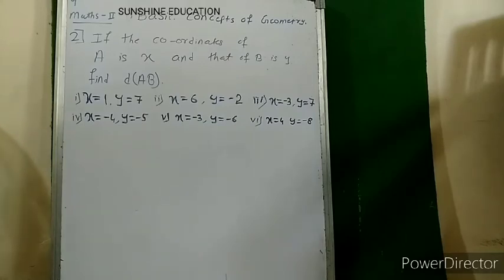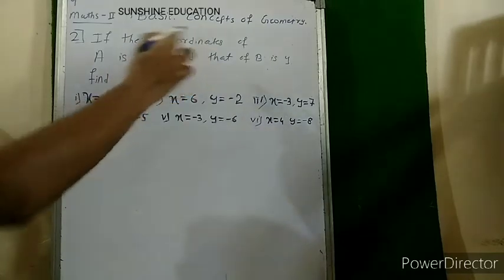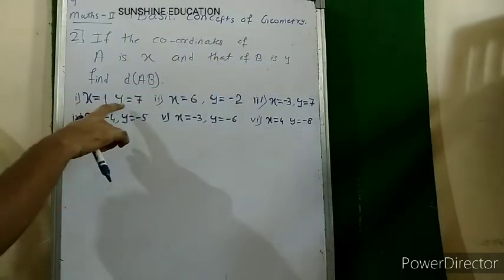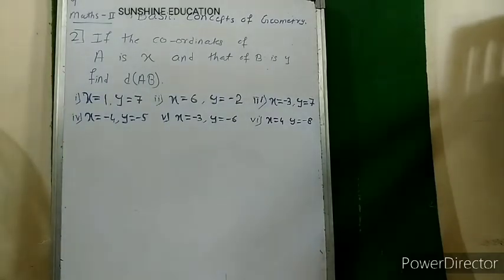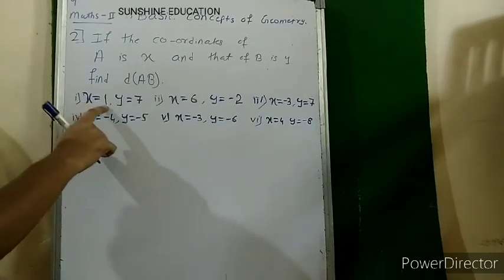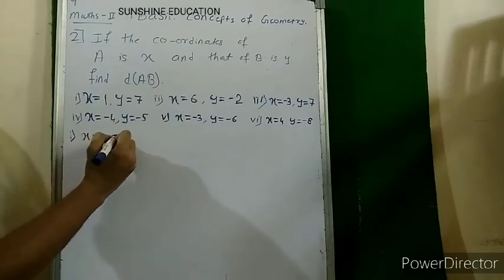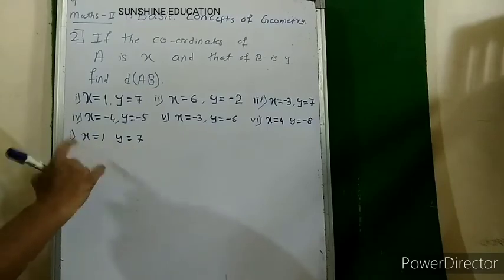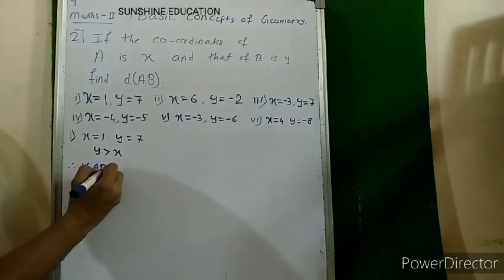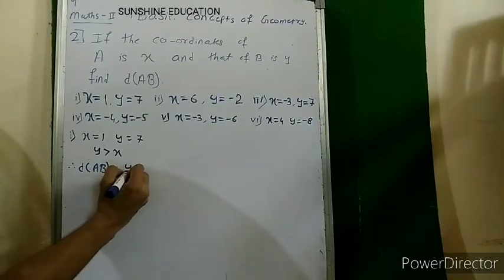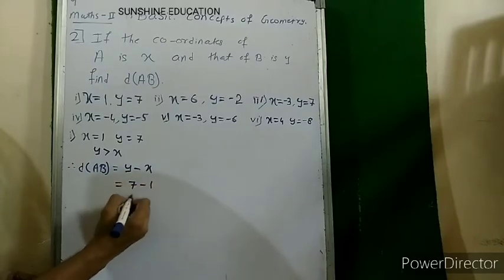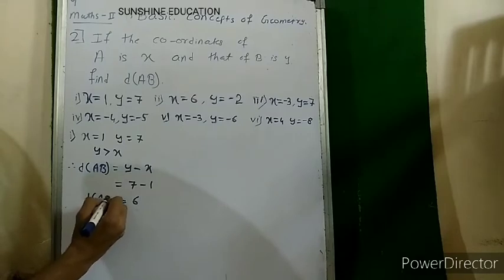Now the second part of the exercise: if the coordinate of A is x and that of B is y, find distance AB. First sub-question: x = 1 and y = 7. It is clear that y is greater than x, so distance AB = greater minus smaller = y minus x = 7 minus 1 = 6.